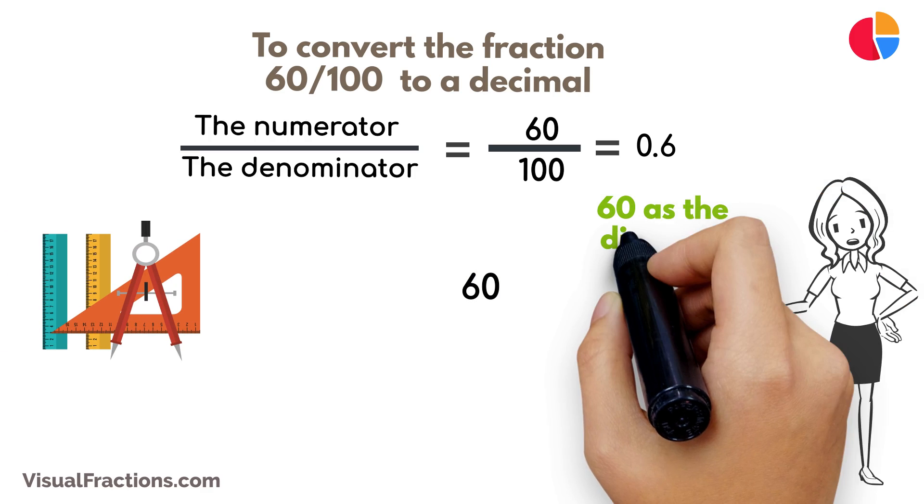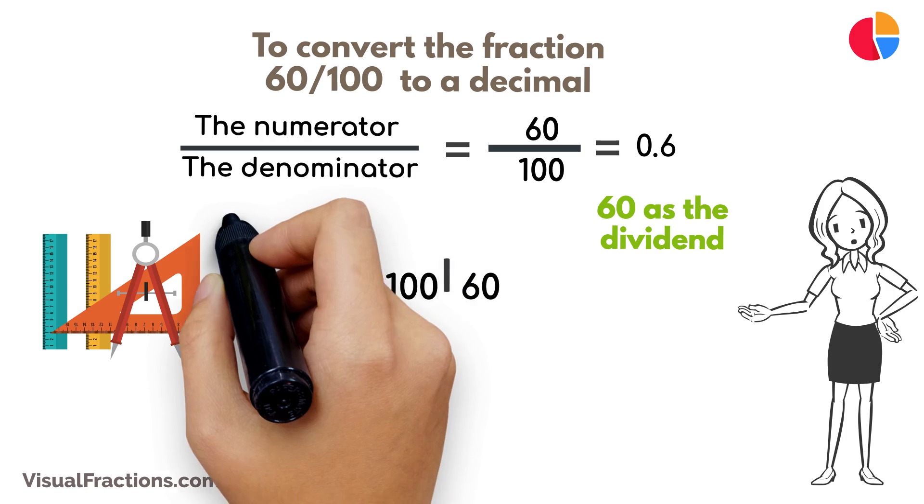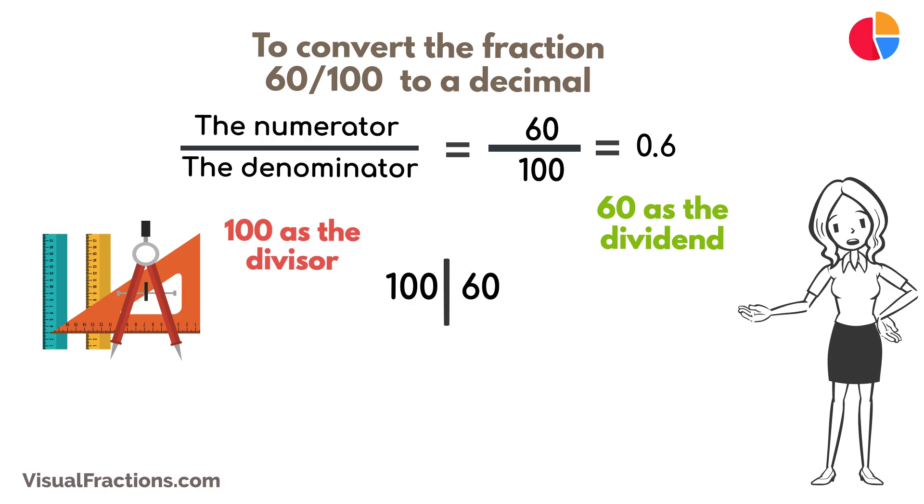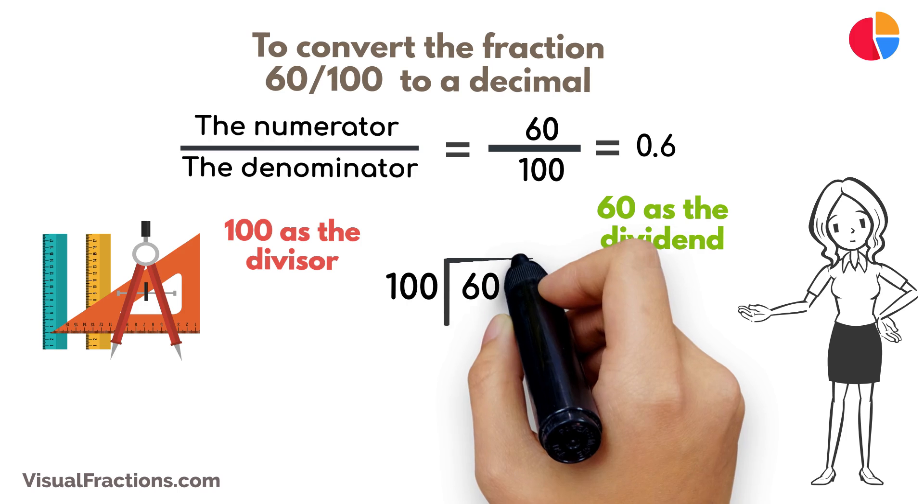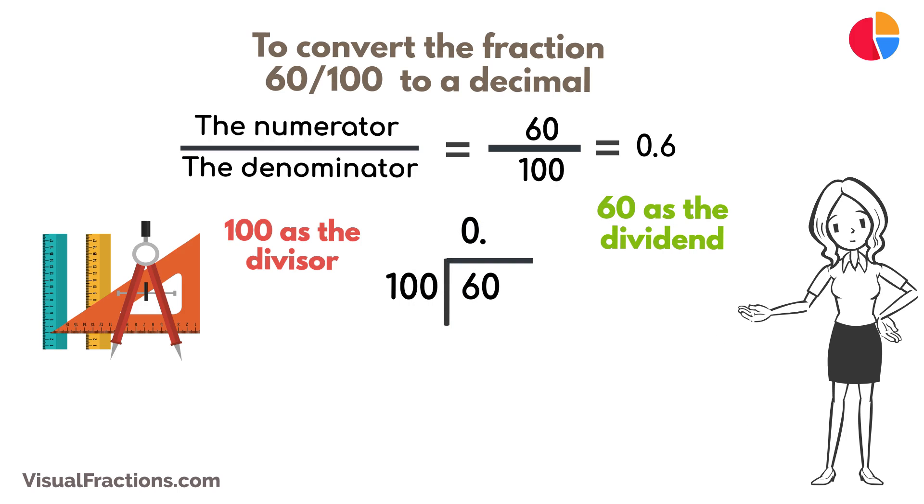we start by writing 60 as the dividend and 100 as the divisor. Since 100 doesn't fit into 60, we add a decimal point in our answer and append a 0 to 60, making it 600.